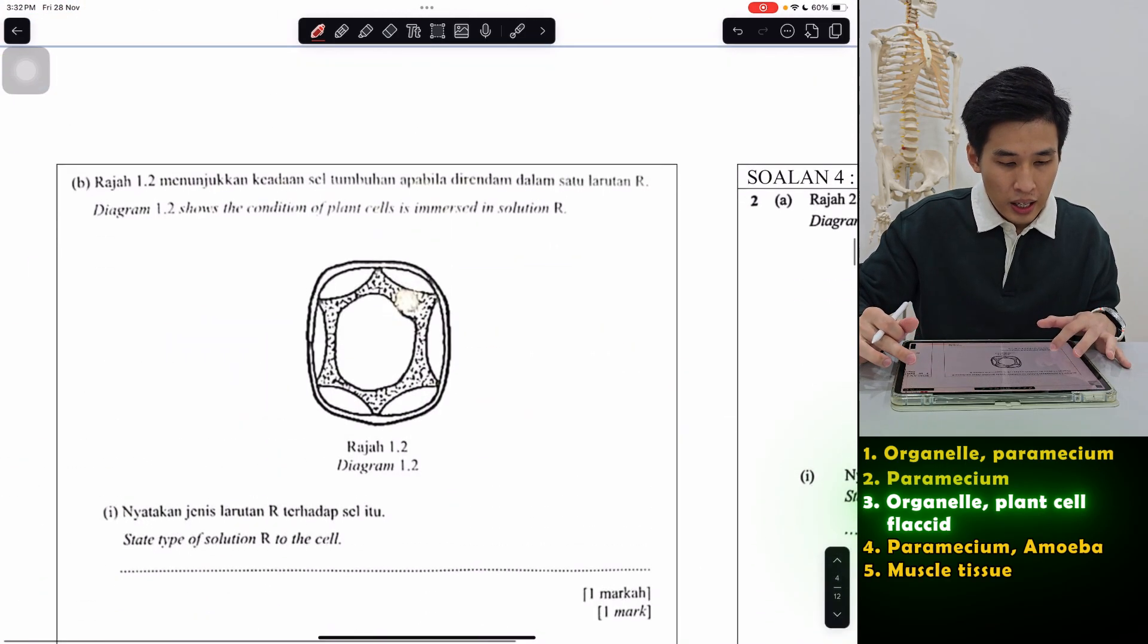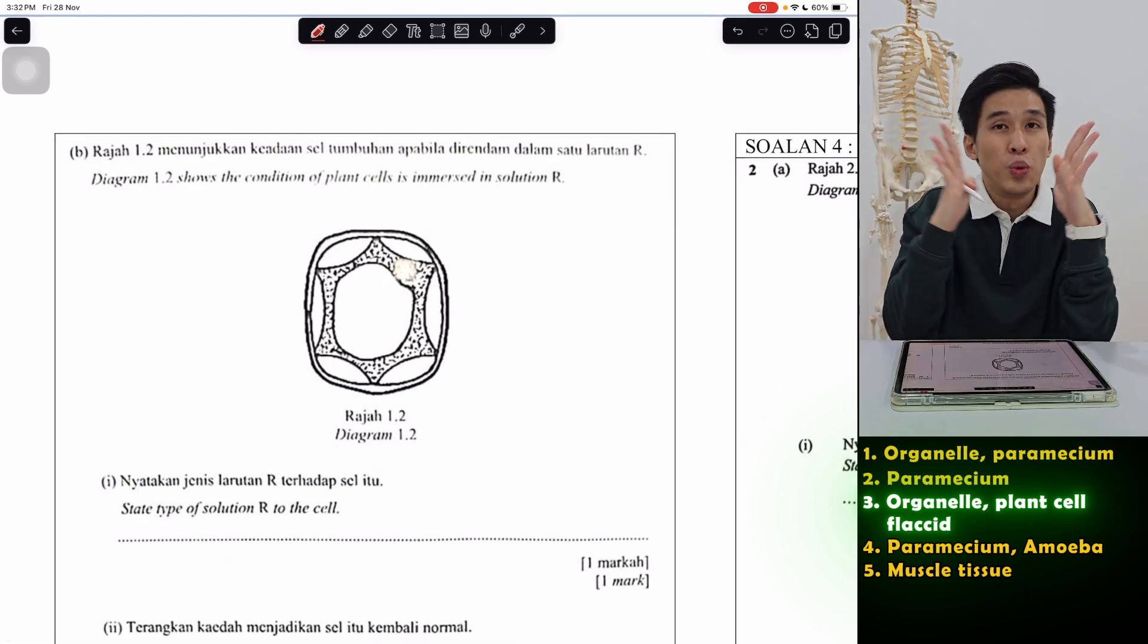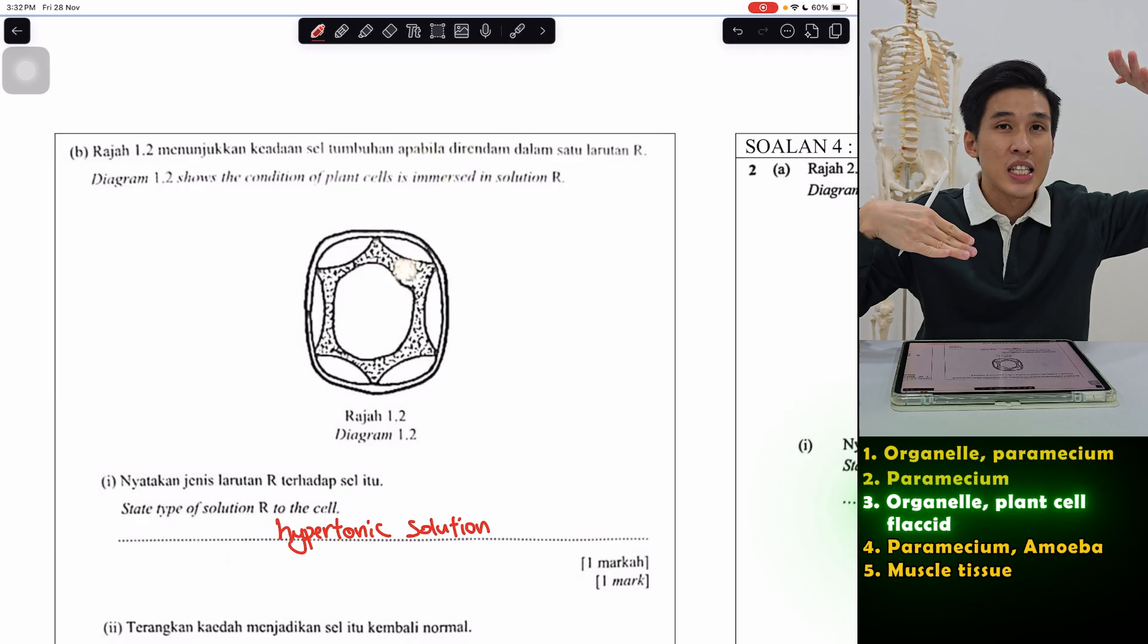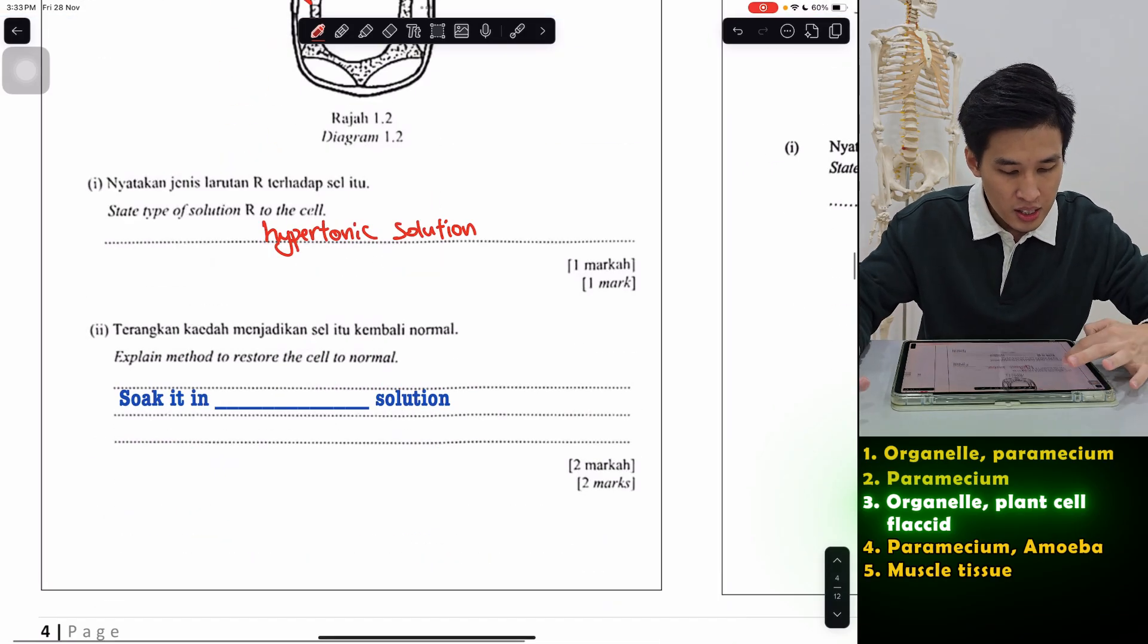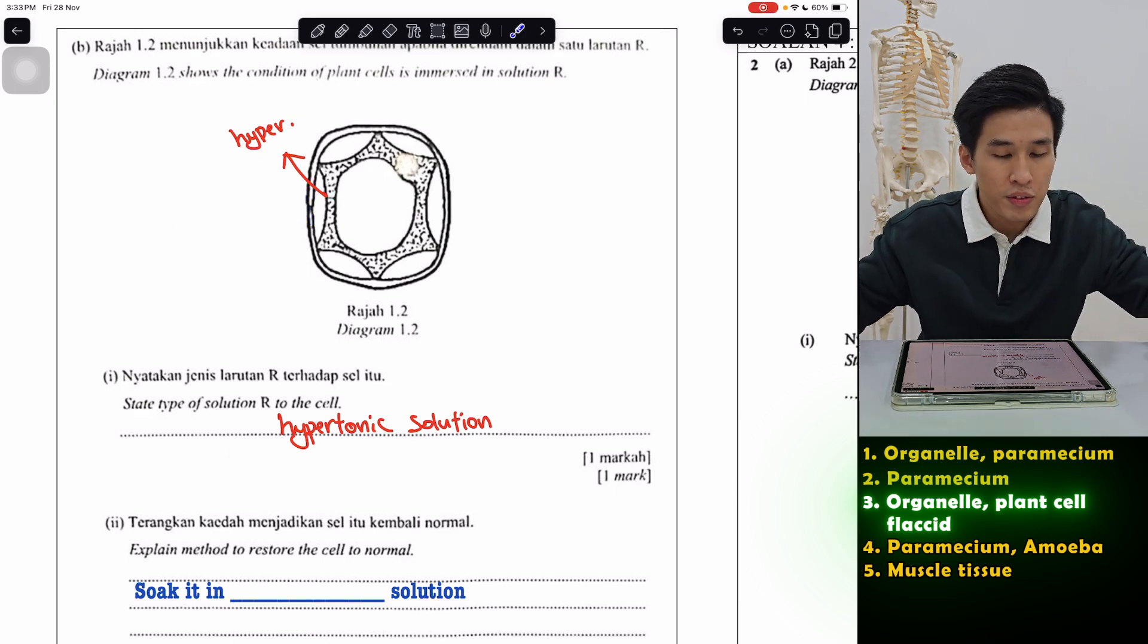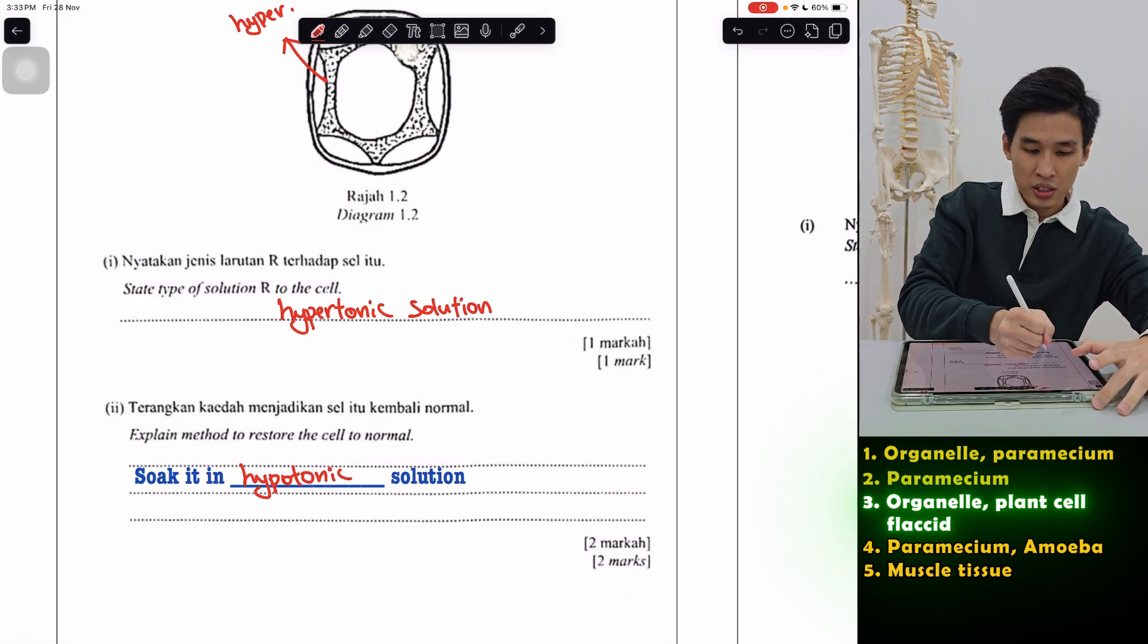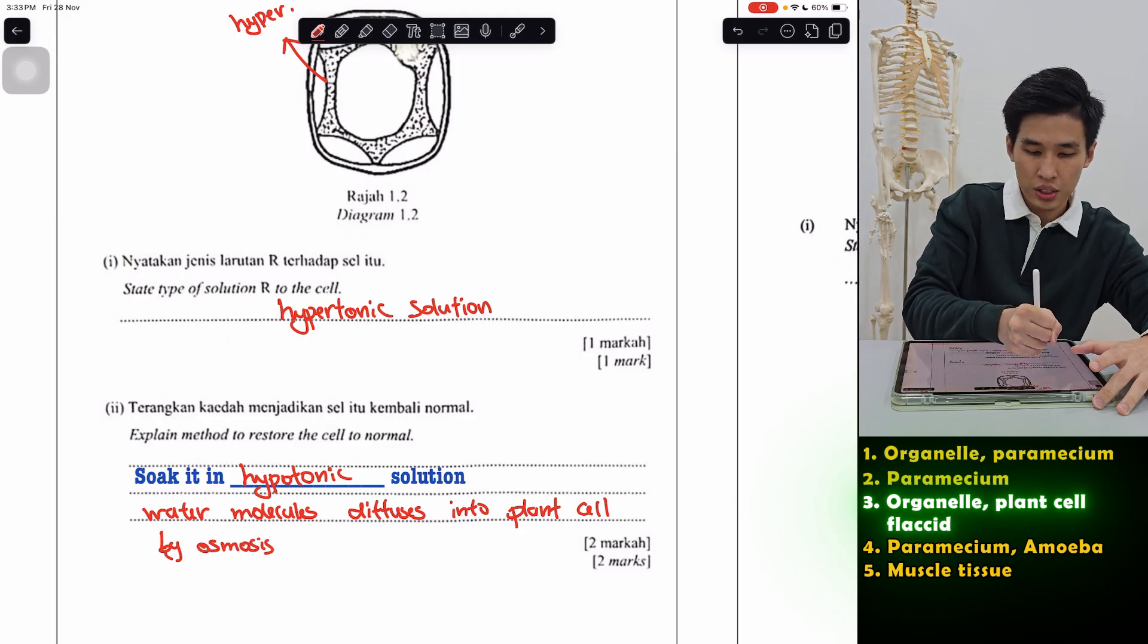Next. 1.2 shows the condition of plant cells immersed in solution R. This is actually a chapter 3 thing, hypo-hypotonic. You can see now the plasma membrane pulled inwards already, showing the water came out already. So obviously it's hypertonic solution. Remember hypo-more water, hyper-less. Always high water potential to low water potential. So water comes out, outside is low, it's hyper on the outside. Explain method to restore the cell to normal. If I want the water to come back inside and then expand back to normal size, obviously I've got to put the opposite solution, which is hypotonic. So what will happen? Just now water diffused out. Now water diffused in by osmosis. So water molecules diffuses into plant cell by osmosis.